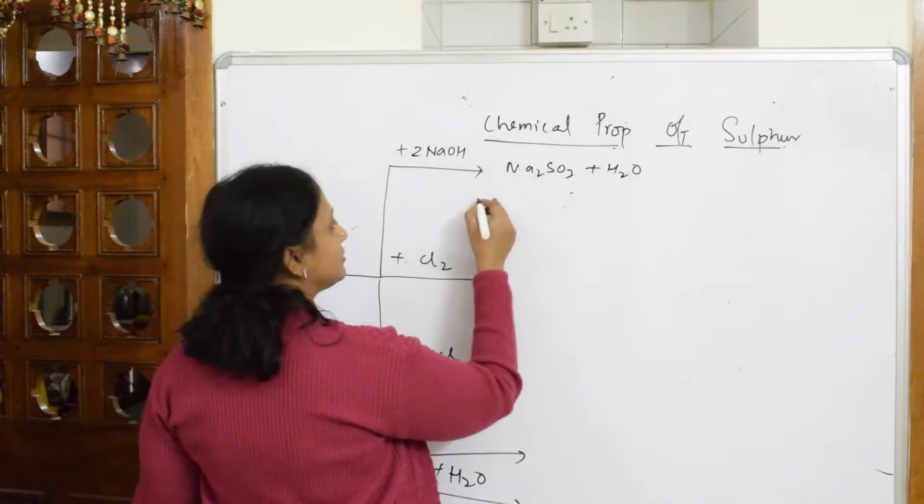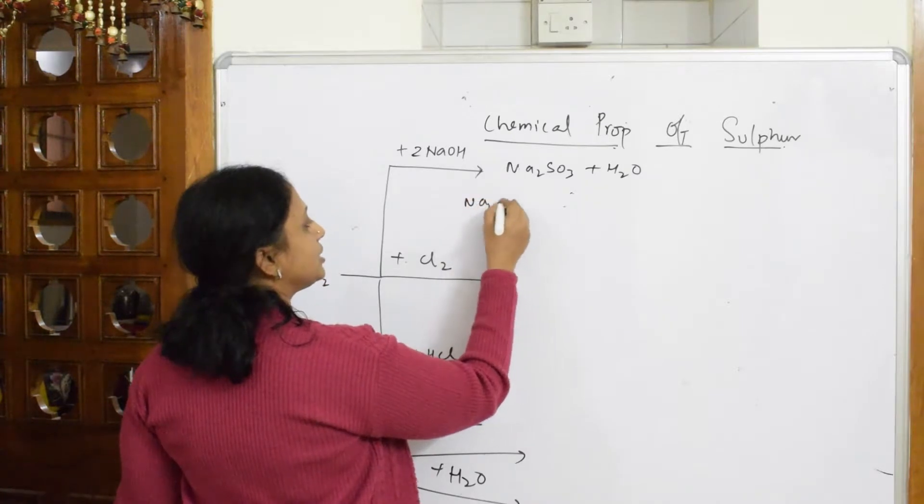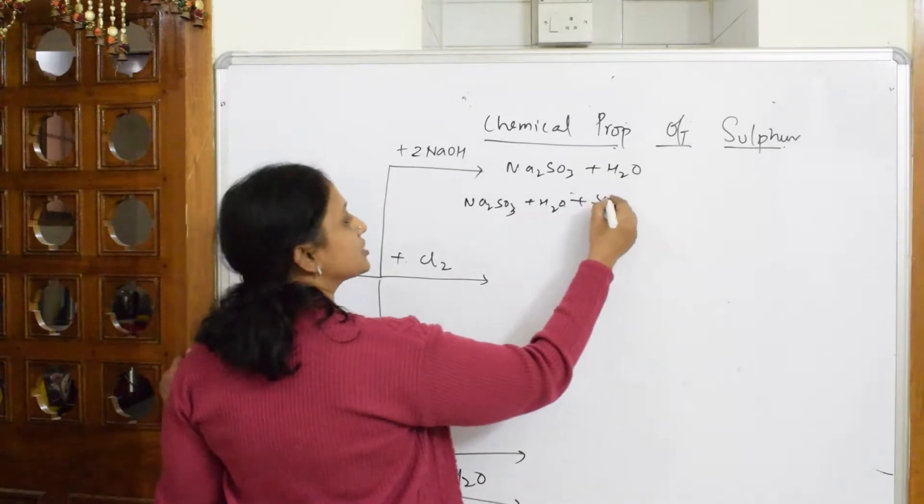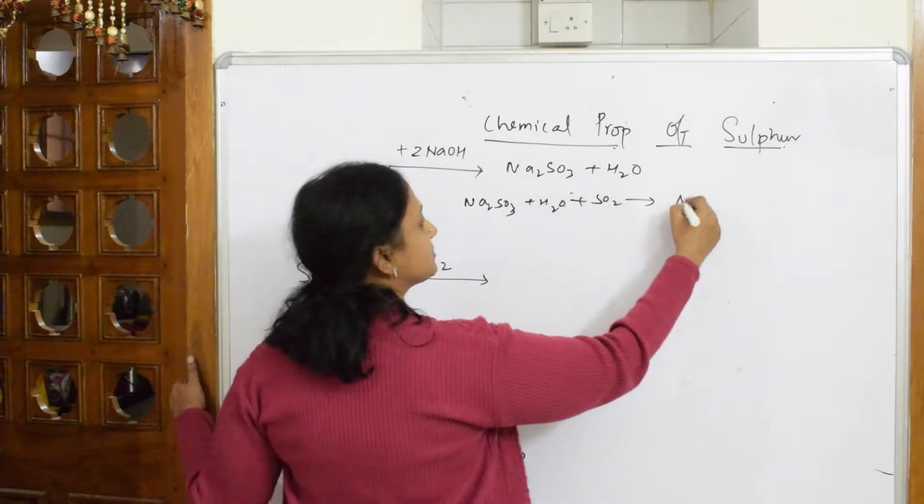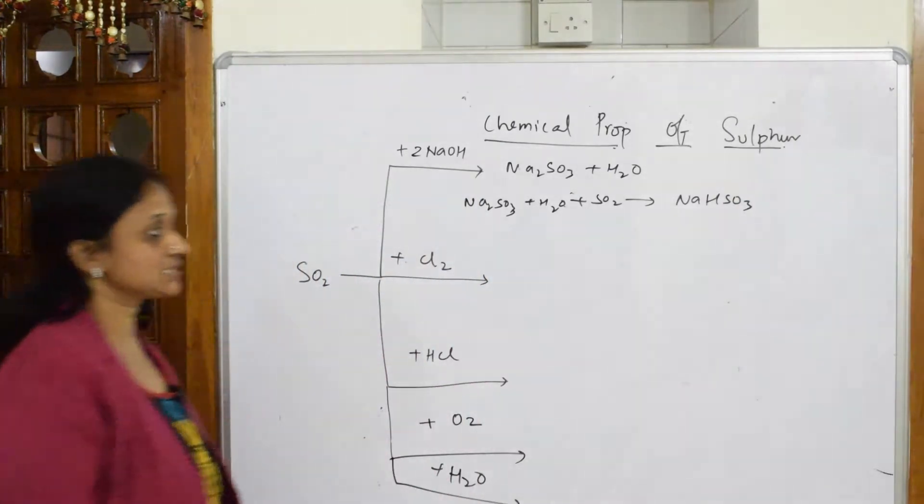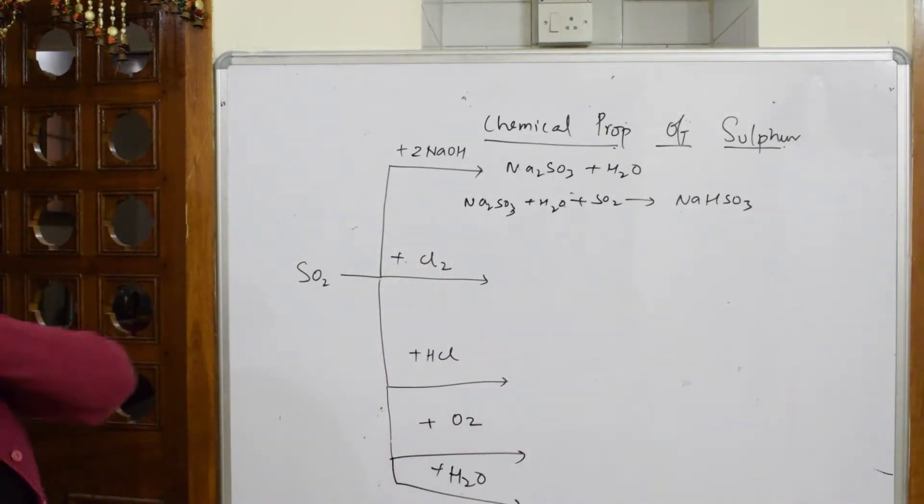Now further, if I take this Na2SO3 and see the reaction: Na2SO3 plus water and again the sulfur dioxide, it's going to form the next one, that is NaHSO3, sodium bisulfite. Simple reaction, just addition and you're getting the product.